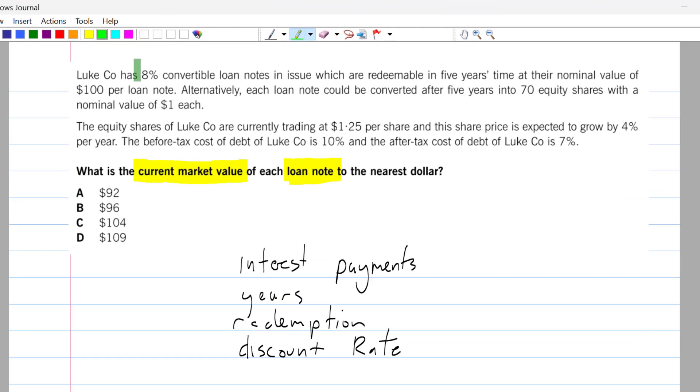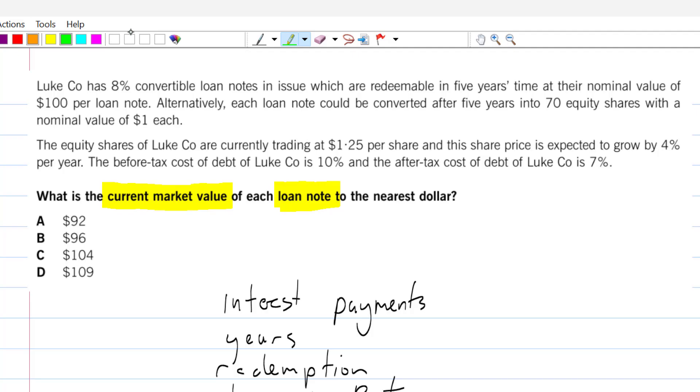Luke Co has 8% convertible loan notes. Let's get to the convertible bit in a moment. 8%, okay that would be the coupon rate, the interest payment, so you're going to get 8%. And these bonds mature in five years time, so that's the number of years: five years. And the nominal value is $100 per loan note. Okay, so these loan notes were sold in $100 blocks, and if you own one block, $100 worth of loan note, you will get $8 interest payment every year.